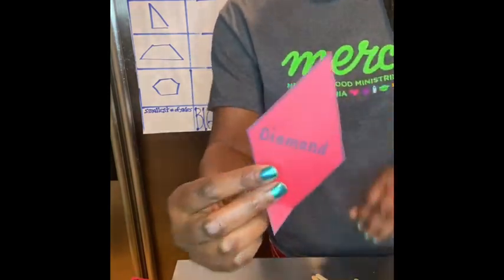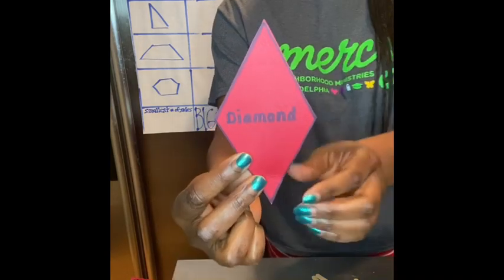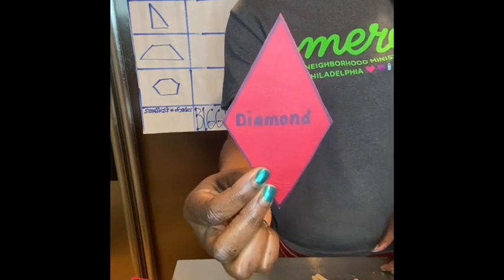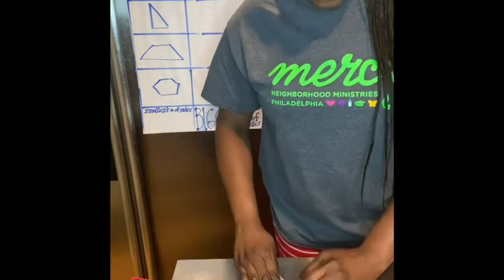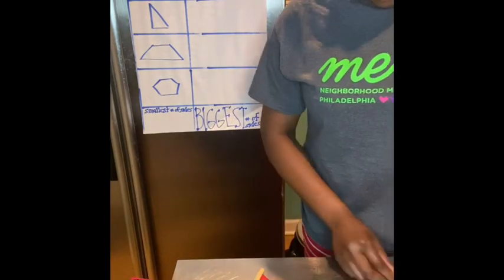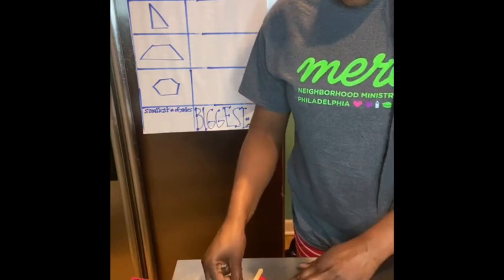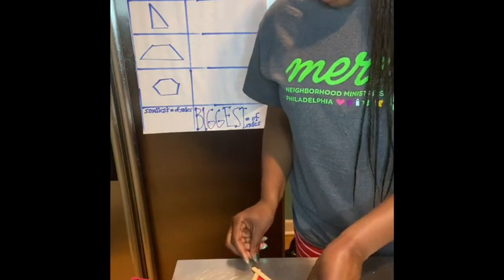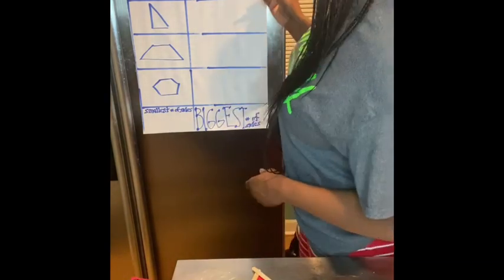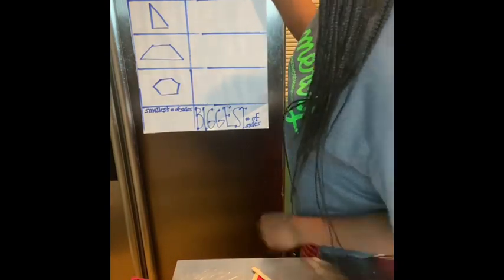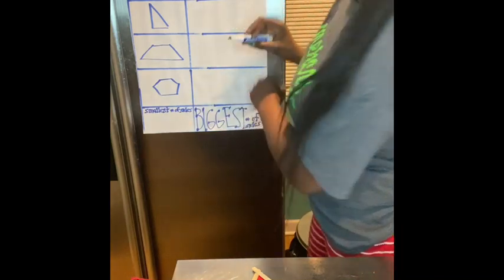Our next shape — what shape is that? It has four sides that are the same length, but it's not a square. It's a diamond. Let's see how many sides the diamond has. One, two, three, four. The diamond also has four sides.